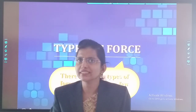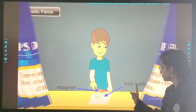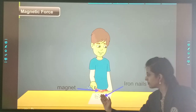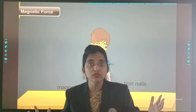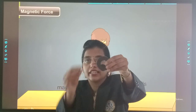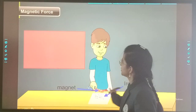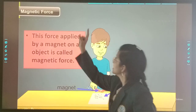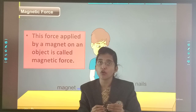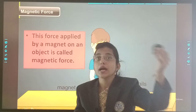It means that there is a force in the magnet which attracts things. So what is that force? He took some iron nails and a magnet, and what he found is that when we bring iron nails close to a magnet, they both get attracted. So this is magnetic force. The force applied by a magnet on an object is called magnetic force.